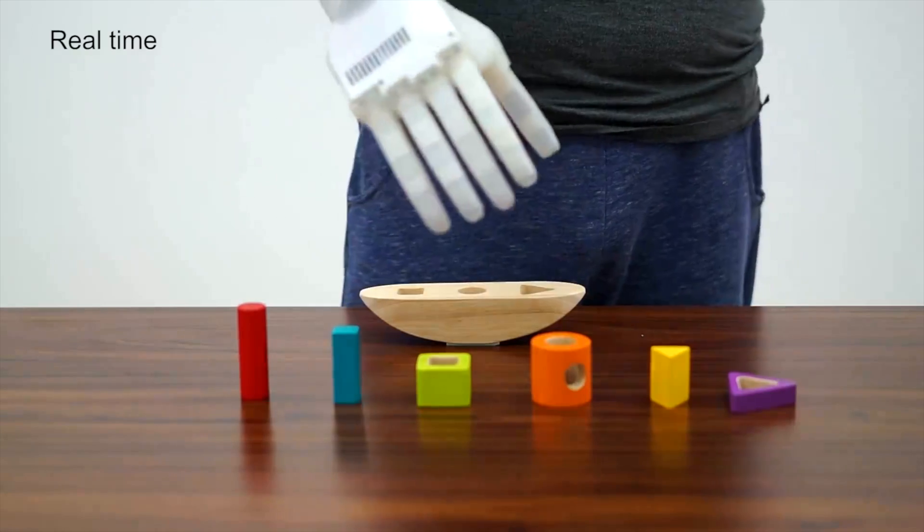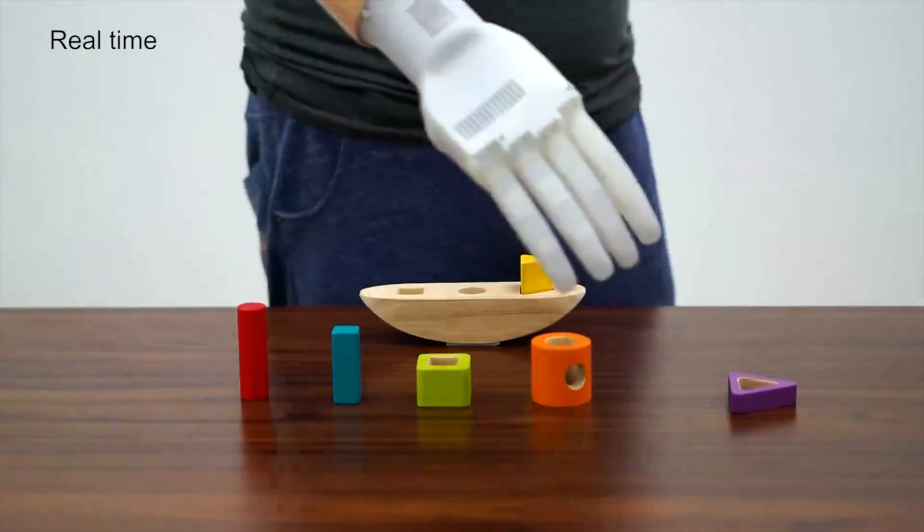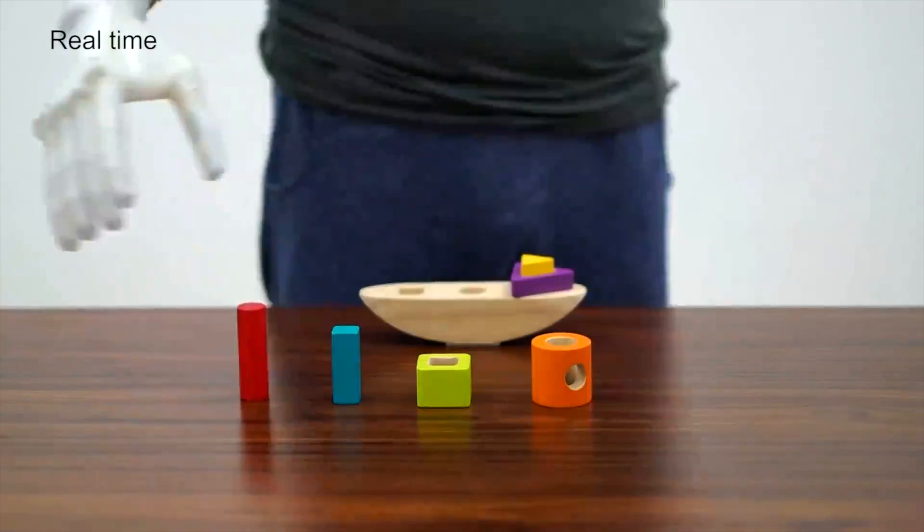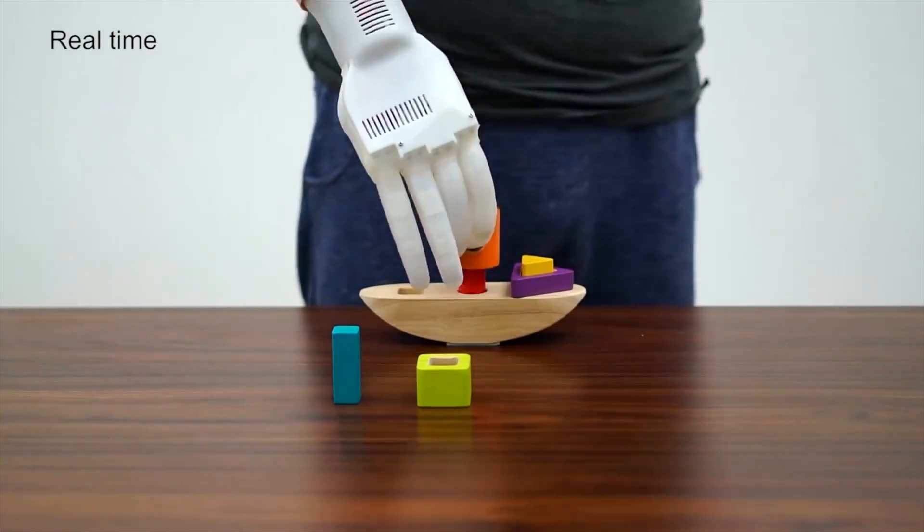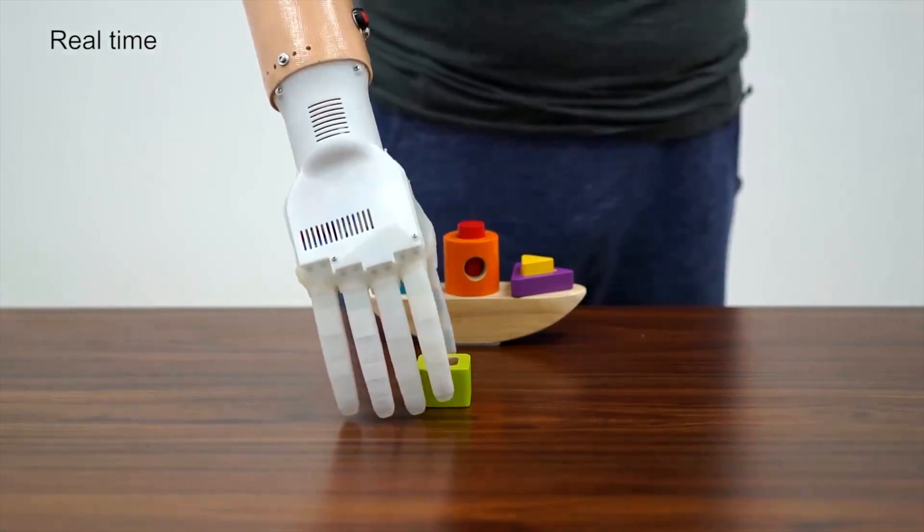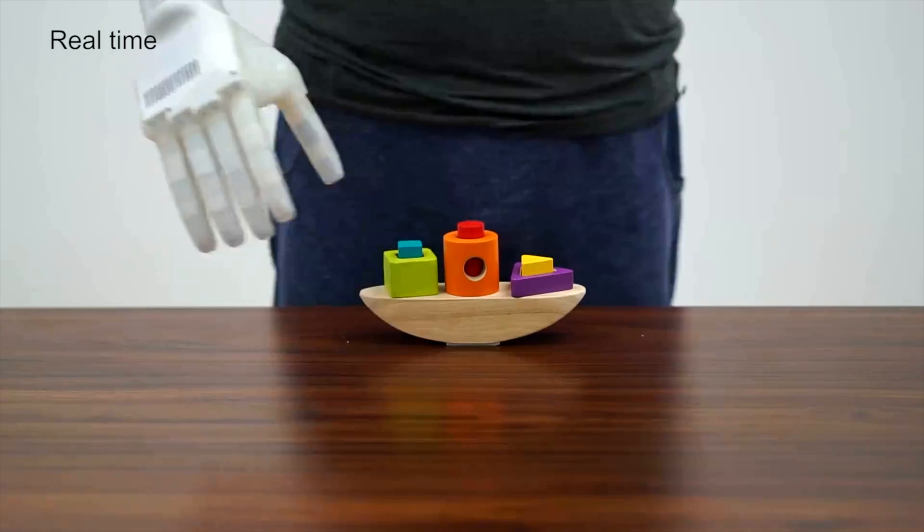Their new smart hand is comprised of five fingers made from a soft, stretchy material and weighs about half a pound, a fraction of the weight of traditional prosthetics. The fingers are then attached to a 3D-printed palm shaped like a human hand.